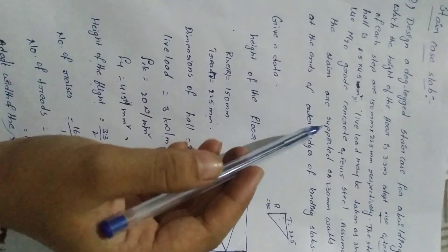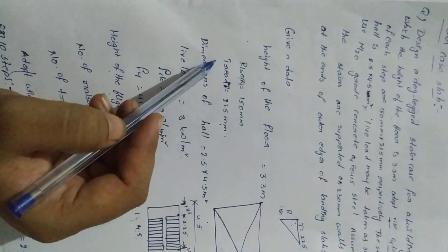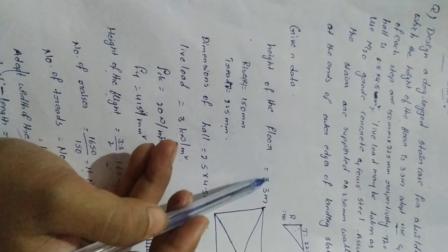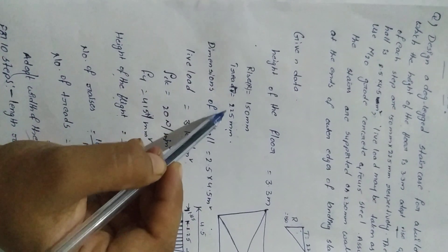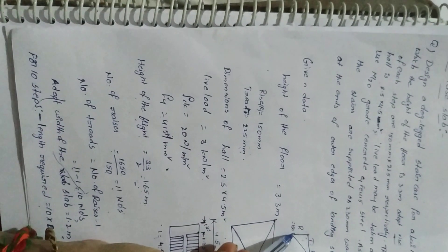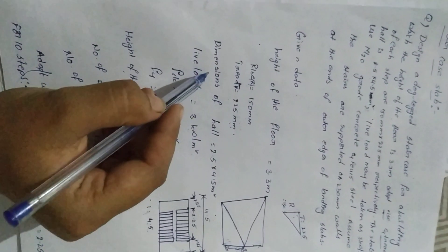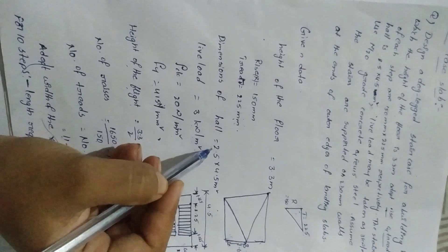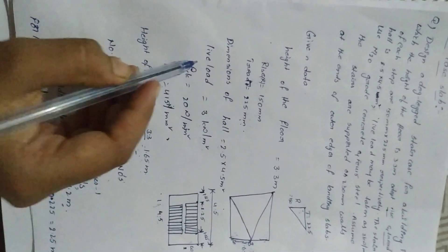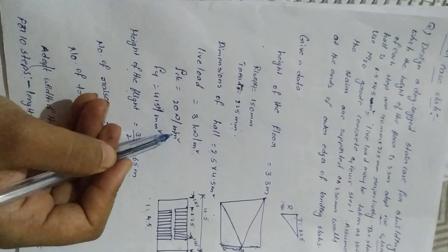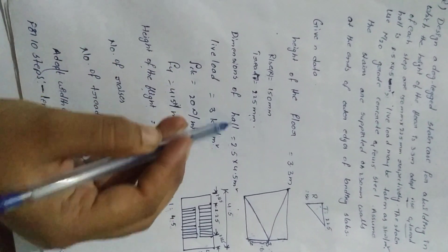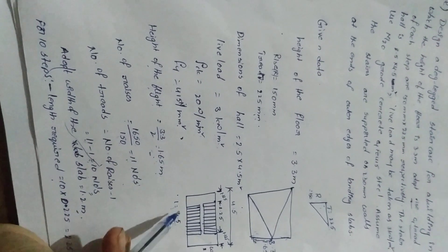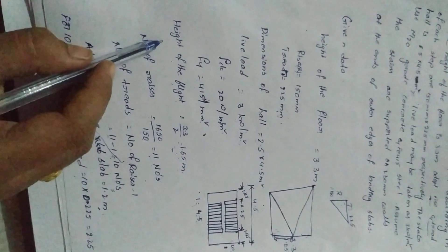The given data: height of floor equals 3.3 meters. Rise equals 150 mm and tread equals 225 mm — shown diagrammatically with the tread and rise labeled. Dimensions of the hall are 2.5 by 4.5 meters. Live load is 3 kN/m². fck equals 20 N/mm² and fy equals 415 N/mm². The hall dimensions are shown diagrammatically indicating length and width.